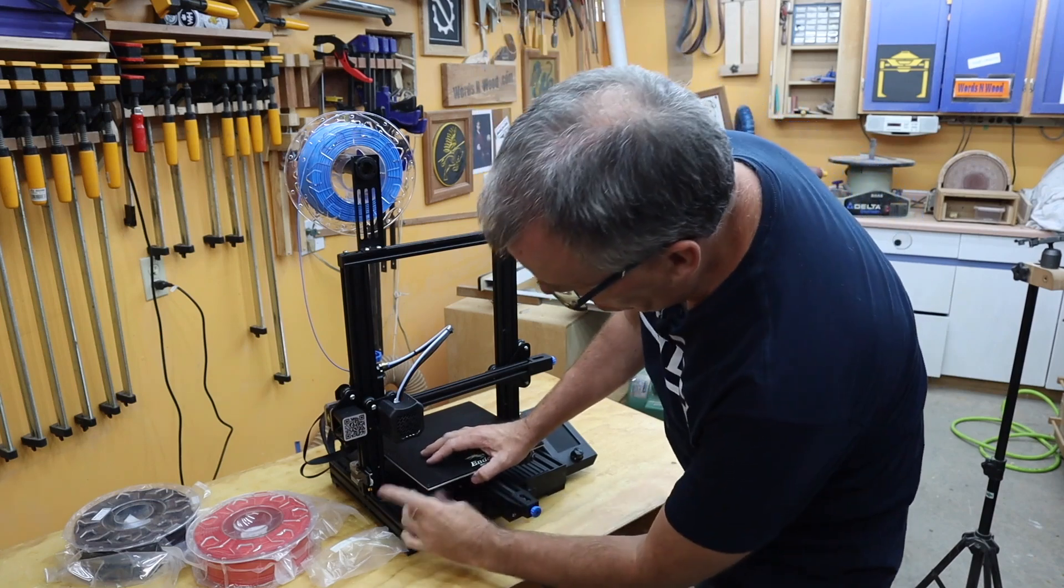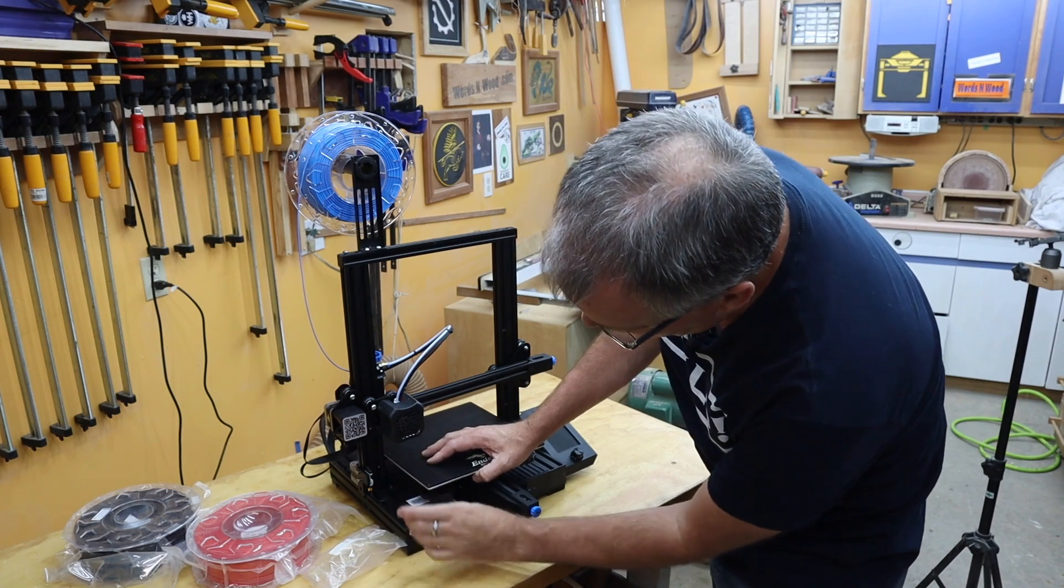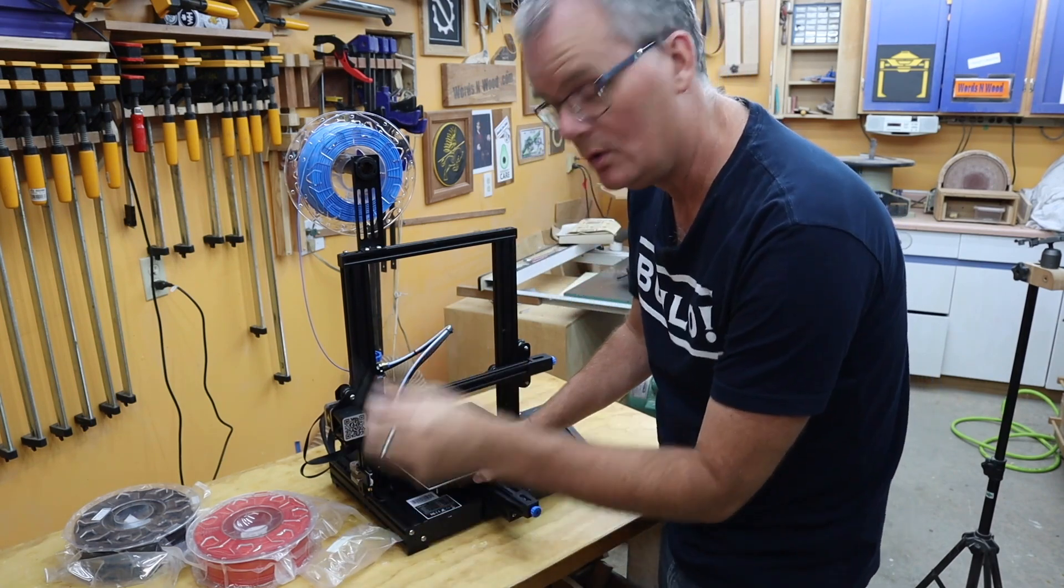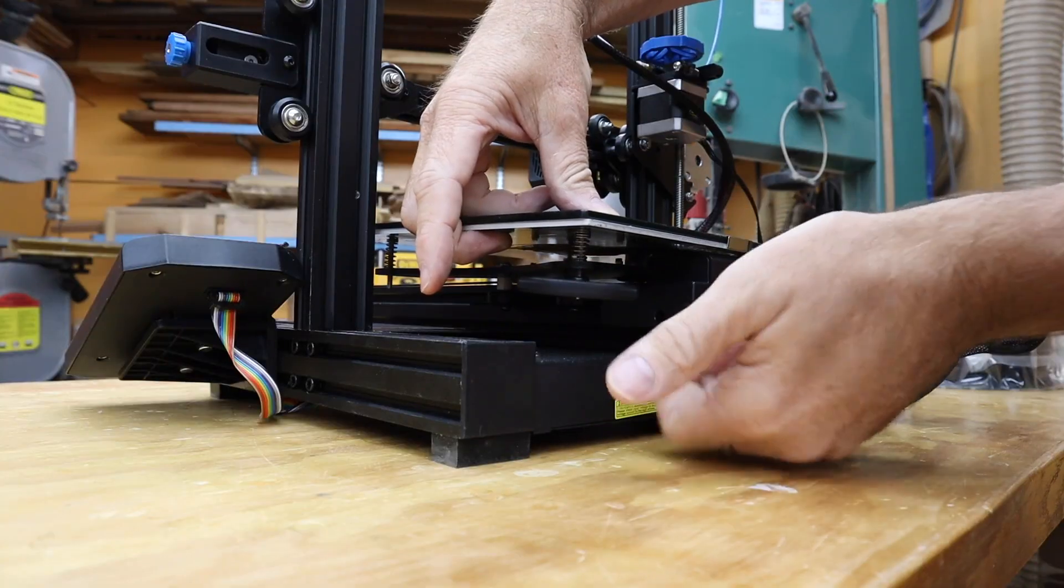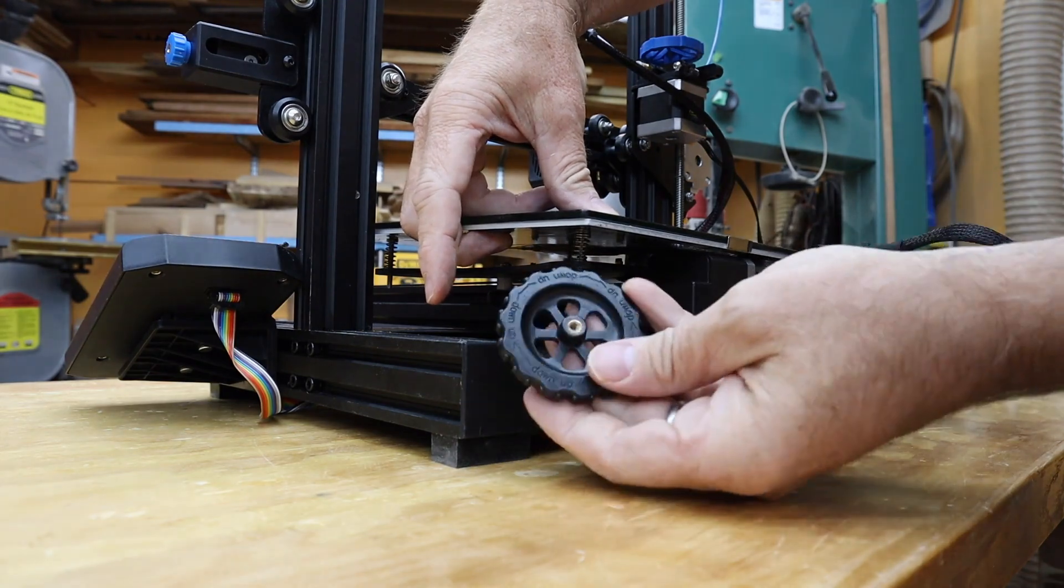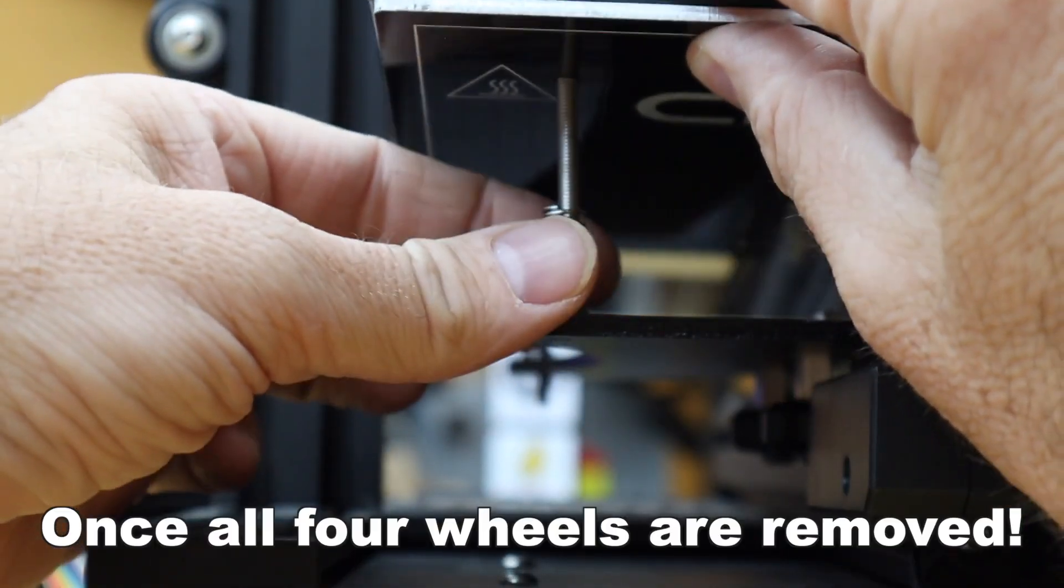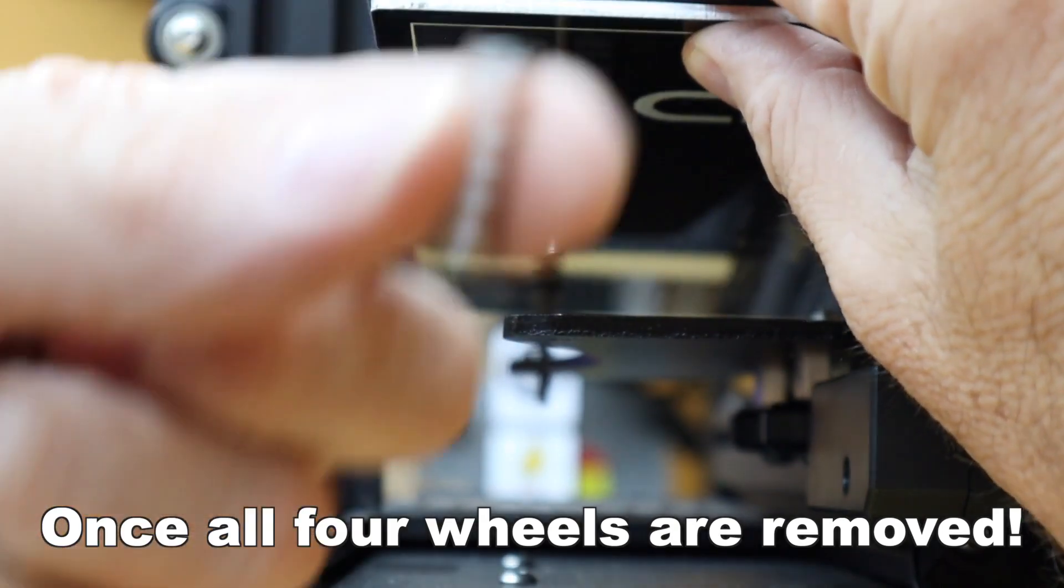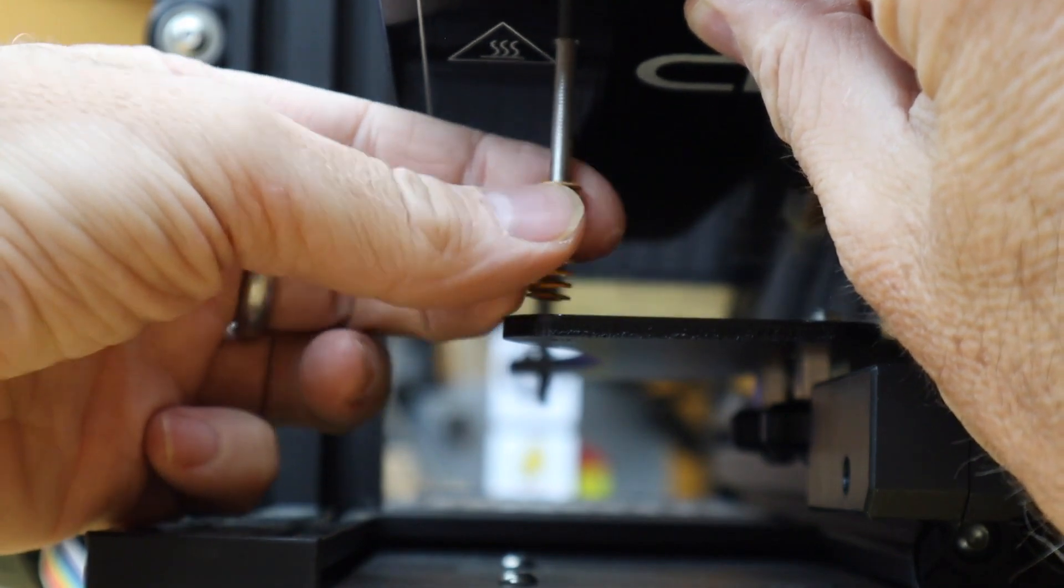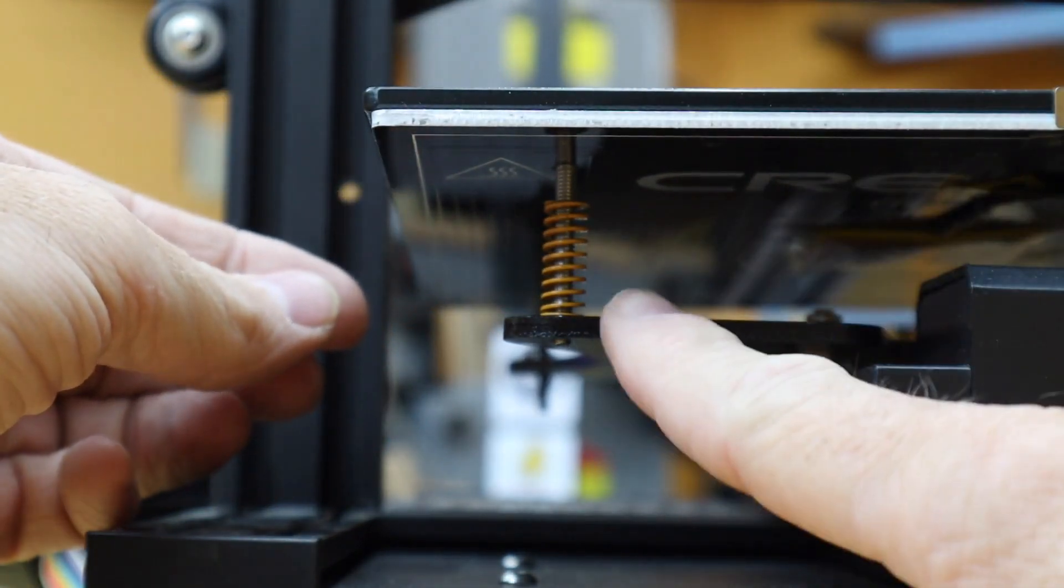All we really have to do here is unscrew each corner of the leveling bed. Take off the old wheel. Now you can just lift the bed. Get it all the way up. Take the spring out. Put the new spring in. And do that for all four corners.